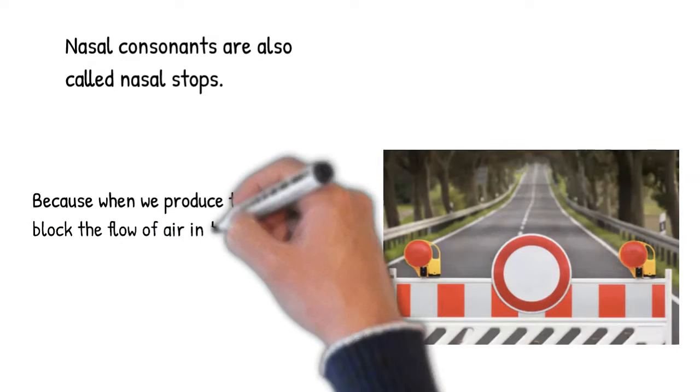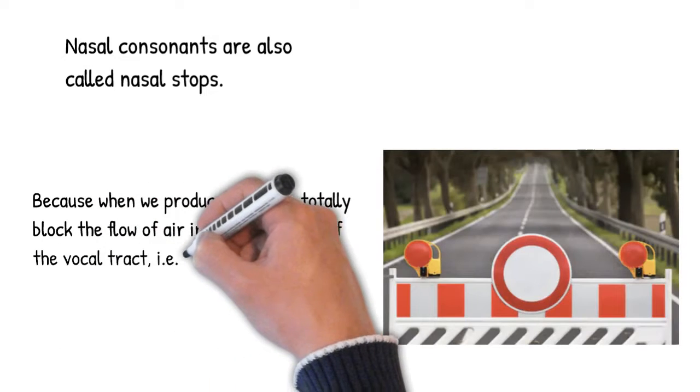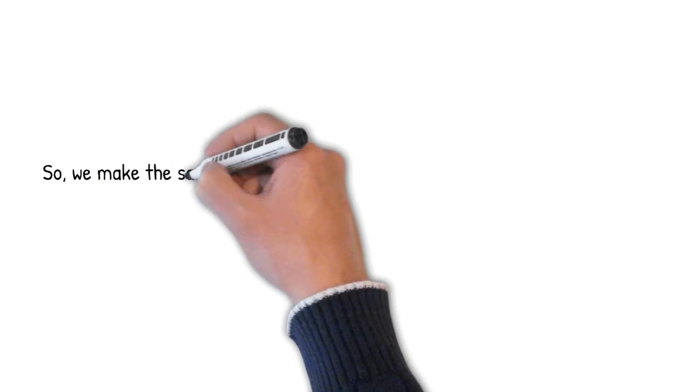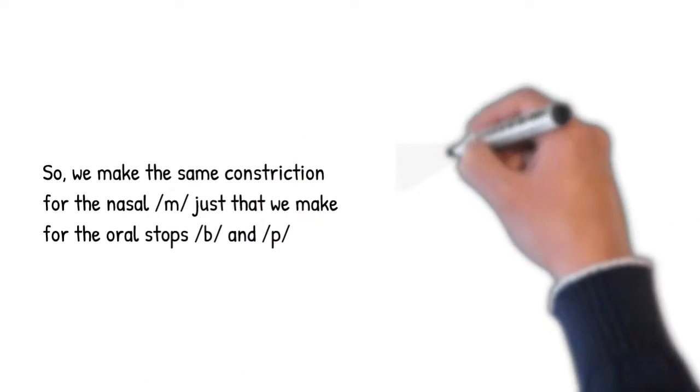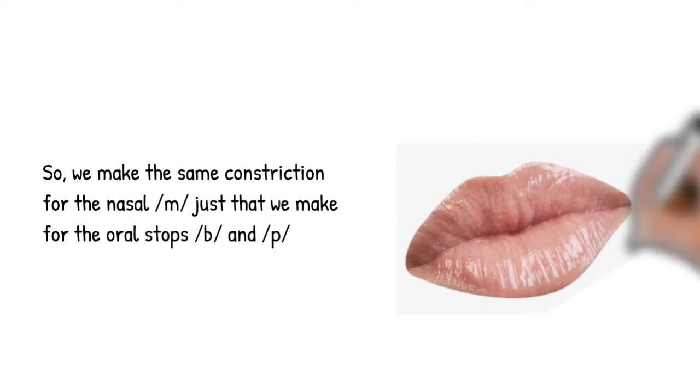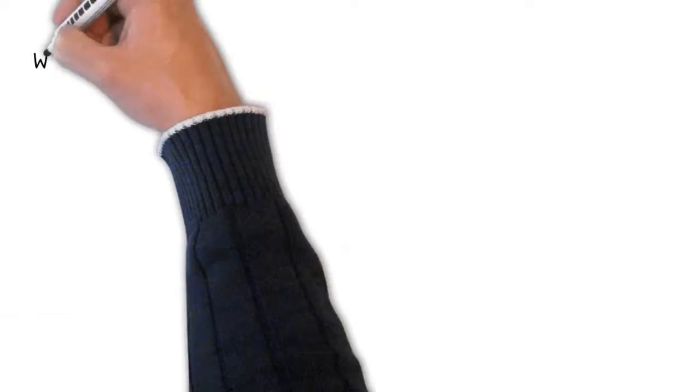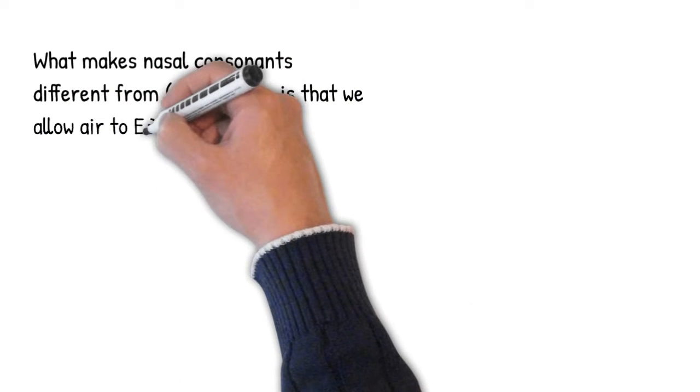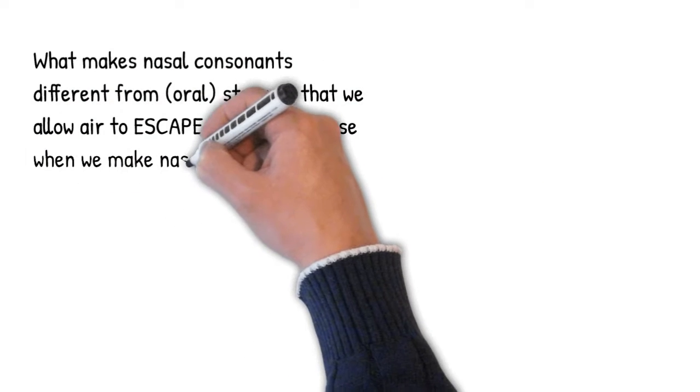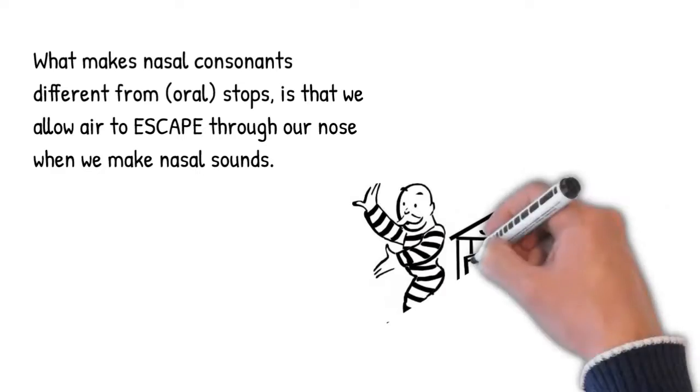In other words, we make the same oral constriction for the nasal M as we do for the oral stops P and B. They're all bilabial, and all three completely block the flow of air at the lips. What makes nasals different from oral stops is that when we produce nasal sounds, we allow air to escape through our nose.